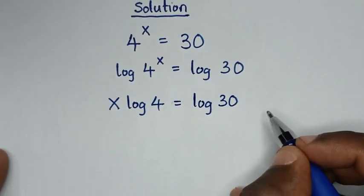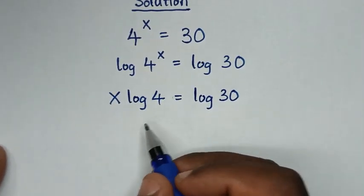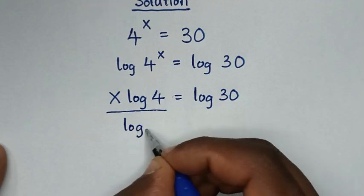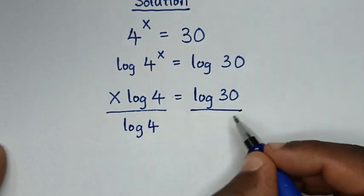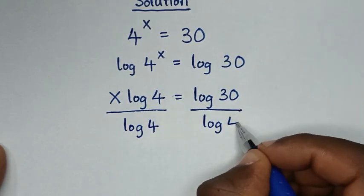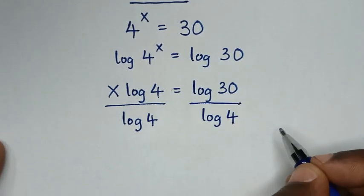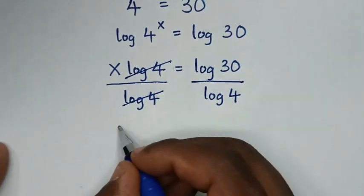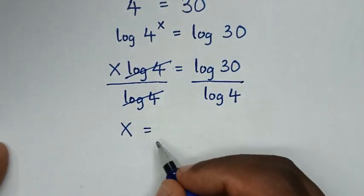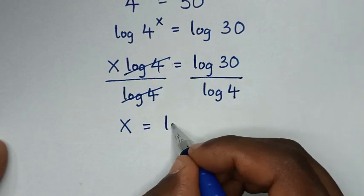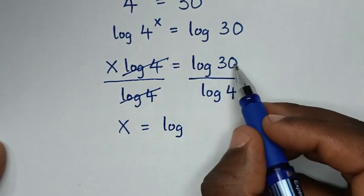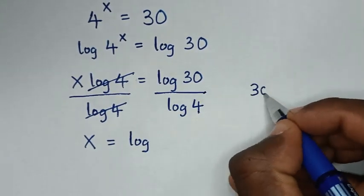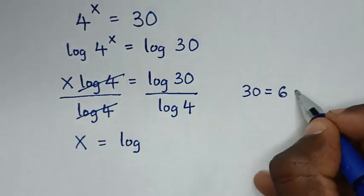Then in the next step we'll divide by log of 4 on both sides. So log of 4 cancels log of 4, and it will be x is equal to log of 30 over log of 4.